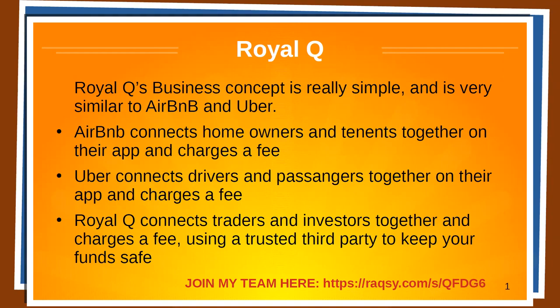Royal Q's business concept is really simple, and it's very similar to Airbnb and Uber. Airbnb connects homeowners and tenants together on the app and charges a fee. Uber connects drivers and passengers together on the app and charges a fee. Royal Q connects traders and investors together on their app and charges a fee, but they also use a trusted third party to keep your funds safe.